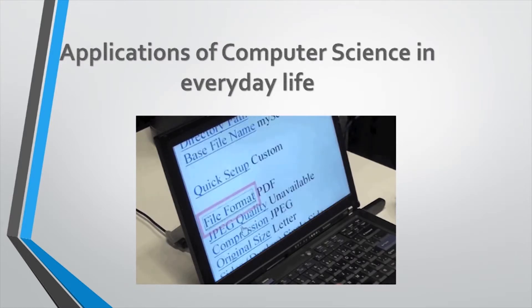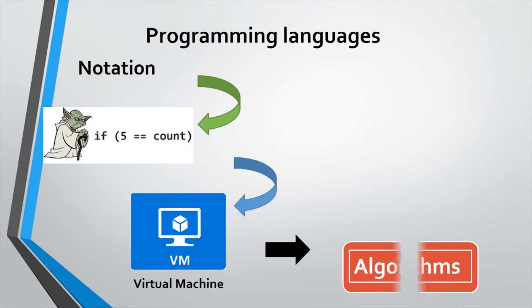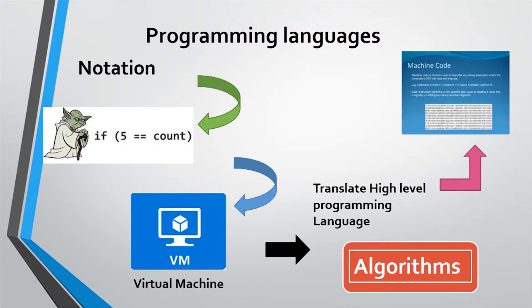Number 1. Programming languages. This area involves notations for defining virtual machines that execute algorithms. The effective translation from high-level languages to machine code and various extension mechanisms can be provided in programming languages.